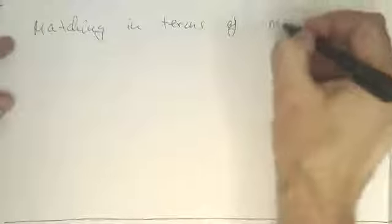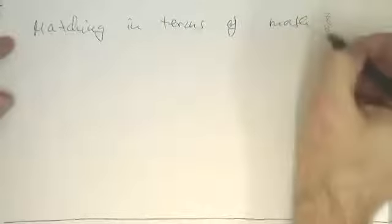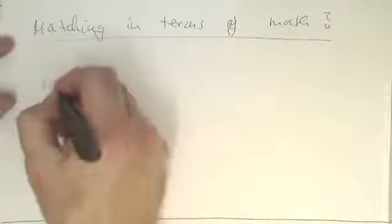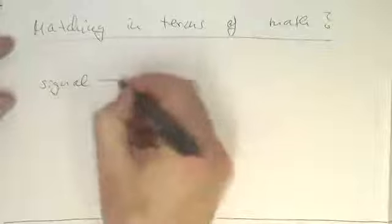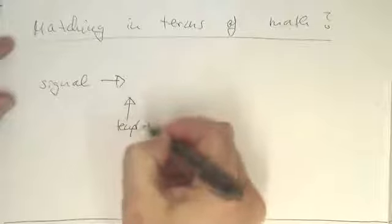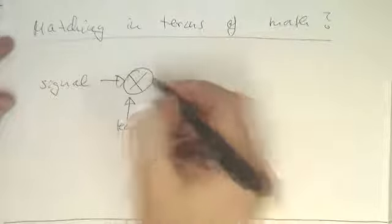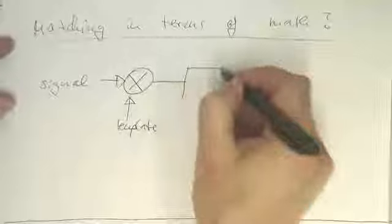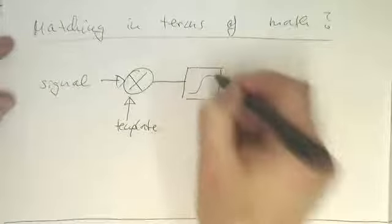So what is the matching process in terms of mathematics? And that's very simple. We just multiply these two with each other, and then we accumulate this product here.